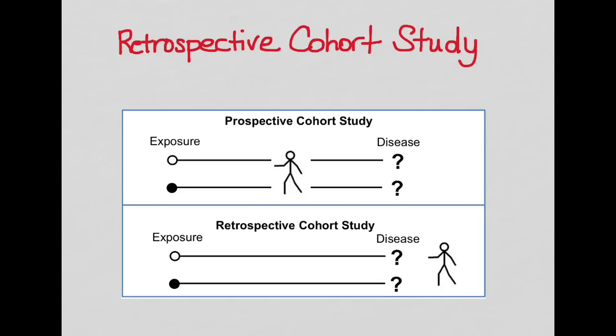So people get the retrospective cohort study confused with a case control, but they're completely different. Case control, you start with the disease, and then you look for the proportion of people that develop the exposure in the disease and the control group that you've created.